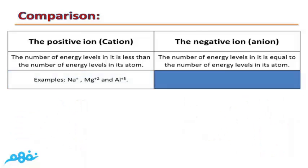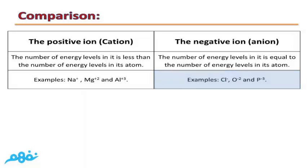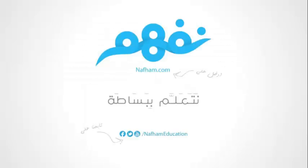Examples of positive ions: sodium Na⁺¹, magnesium Mg⁺², aluminium Al⁺³. Examples of negative ions: chlorine Cl⁻¹, oxygen O⁻², phosphorus P⁻³.